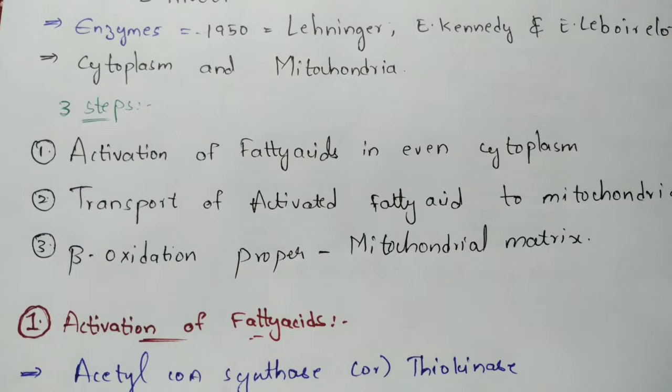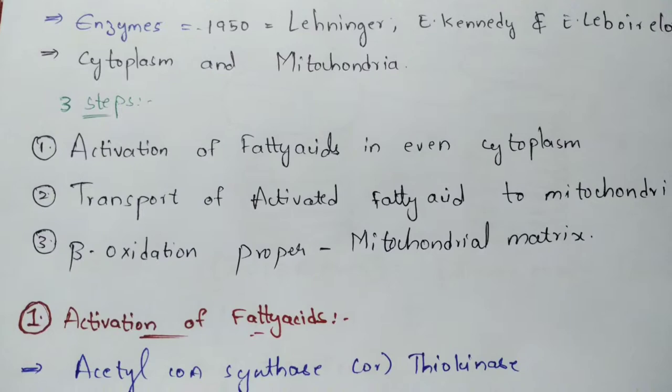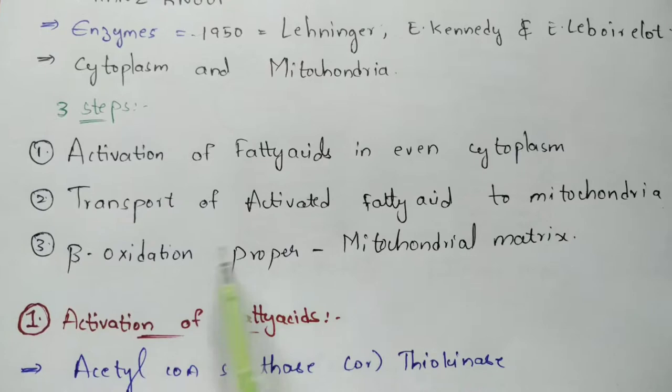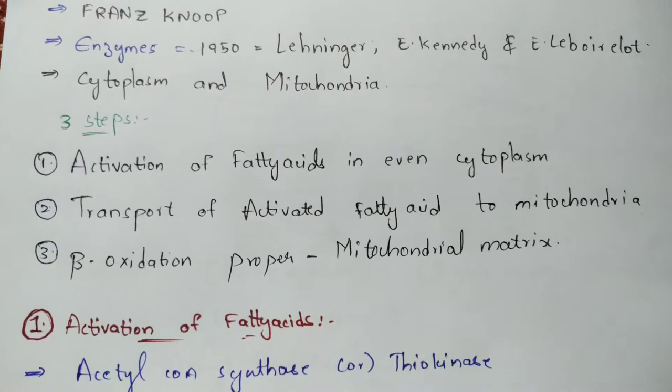The beta oxidation process occurs in the mitochondrial matrix, and the reactions that take place in this beta oxidation will be explained step by step.